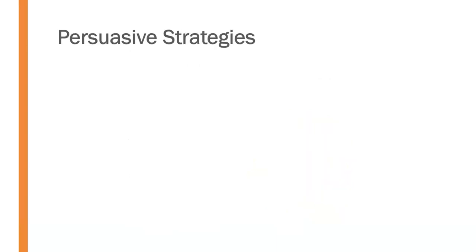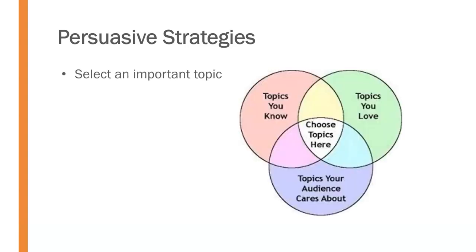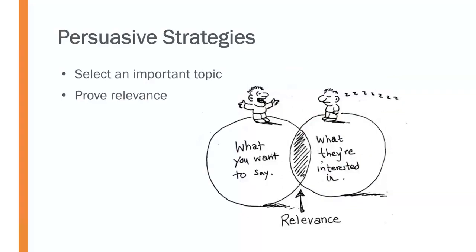When we think about persuasive strategies, first and foremost, it's important that we select a topic that matters — an important topic. We discussed in topic selection selecting from the intersection of topics you know, topics you love, and topics your audience will care about. We also need to prove the relevance to the audience and demonstrate to them why they should care about this. That's critically important if we're going to be effective in persuading.